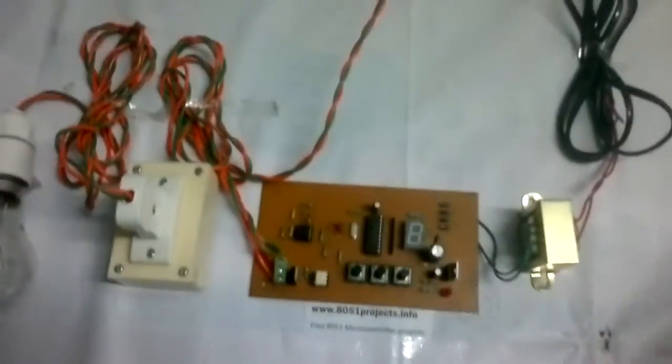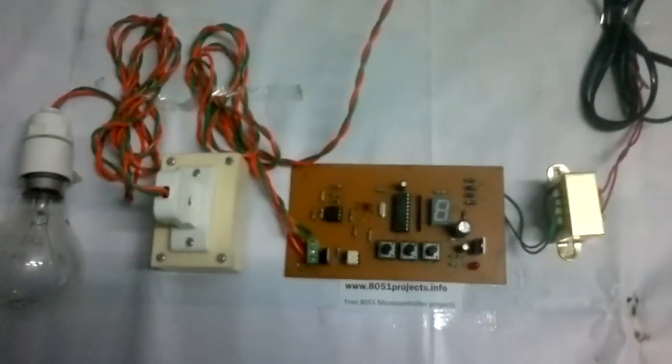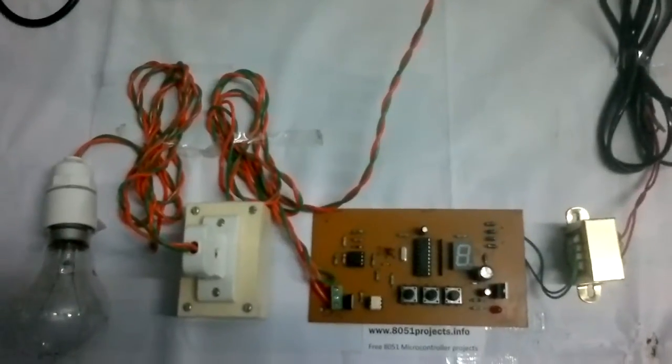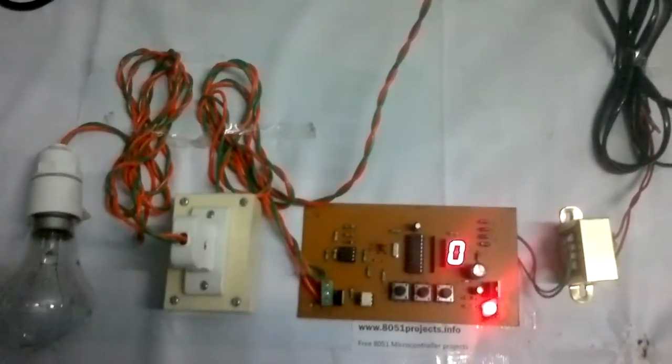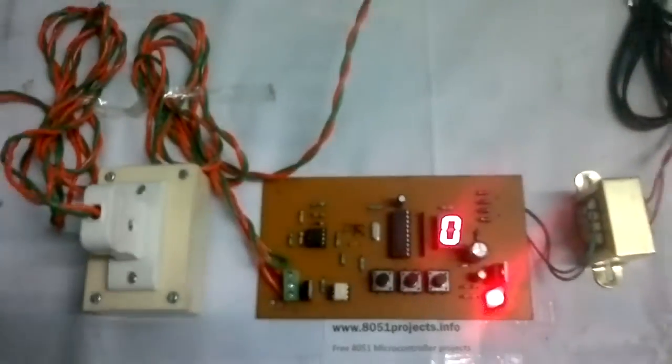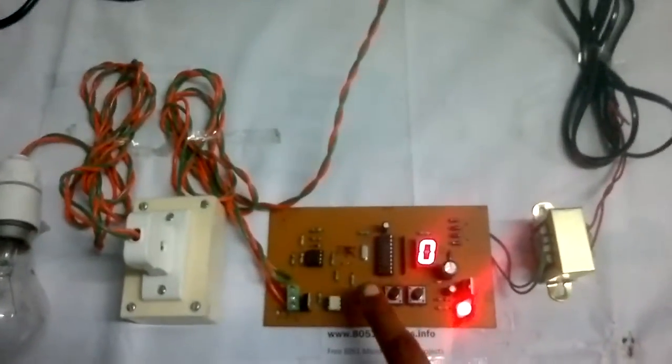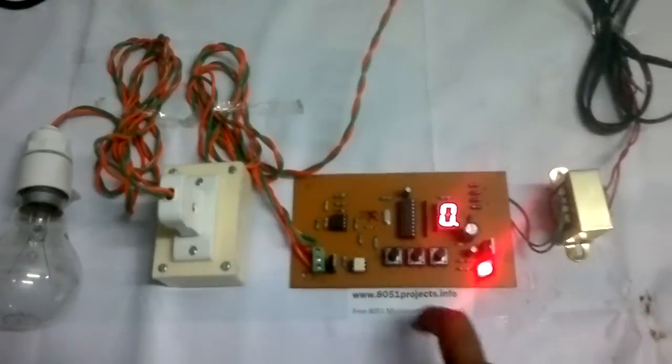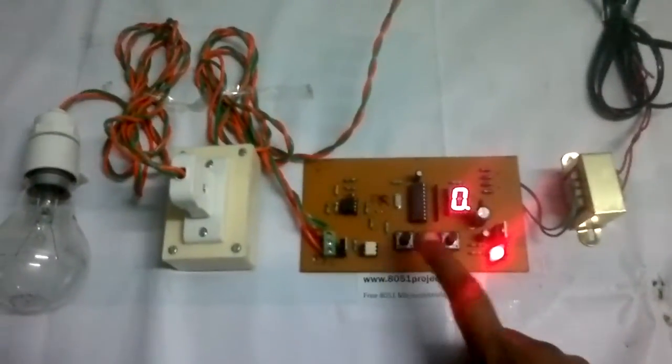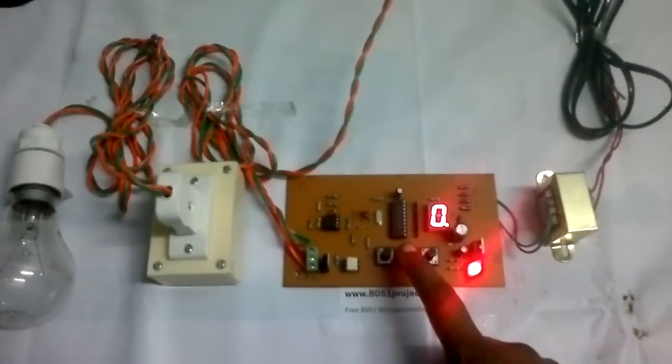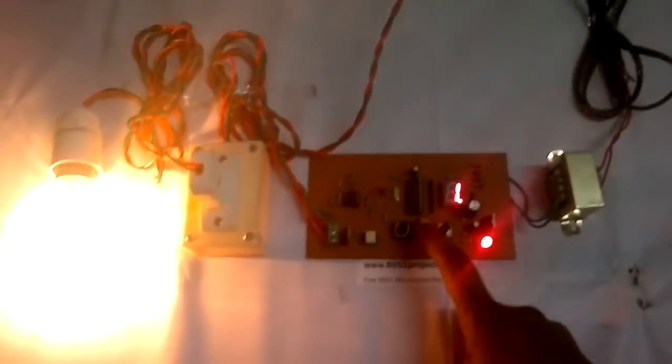Now just switch on the project and see what's happening. So now see, as the speed of the fan is zero it is being displayed as zero. Now I just switch on the fan, so now the fan is switched on, that is the bulb is switched on. Now I am increasing the speed, see it's one.